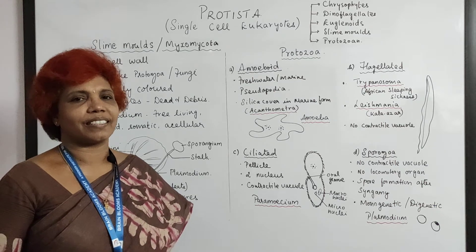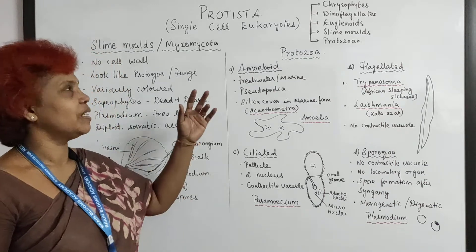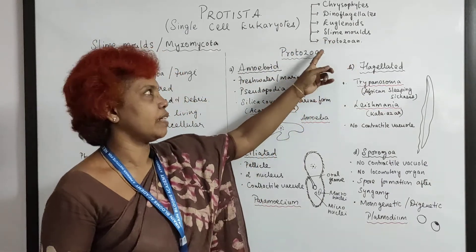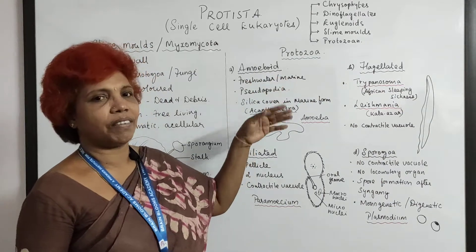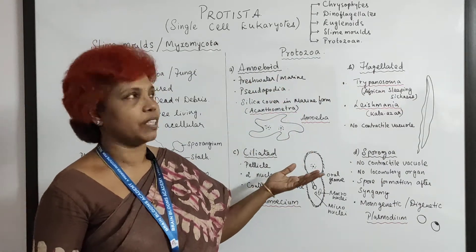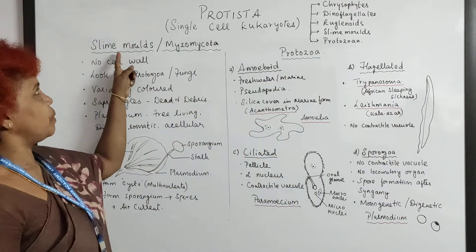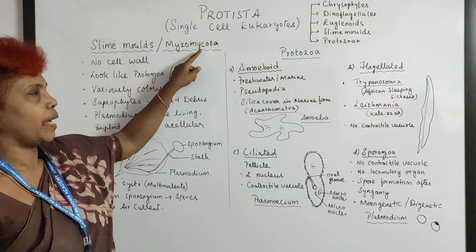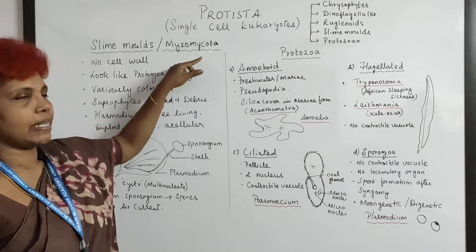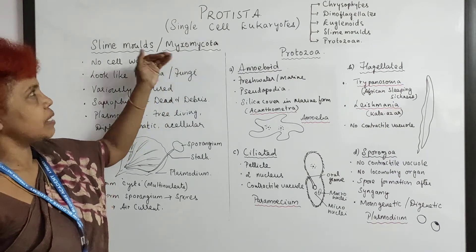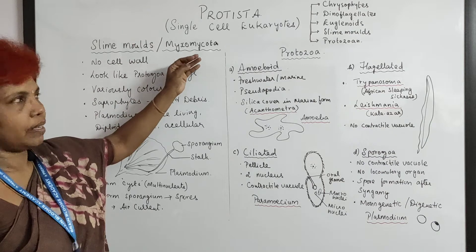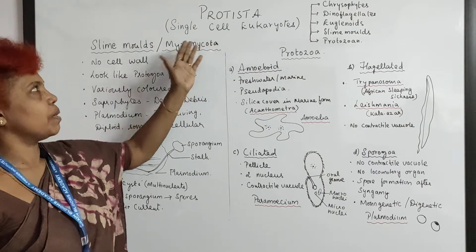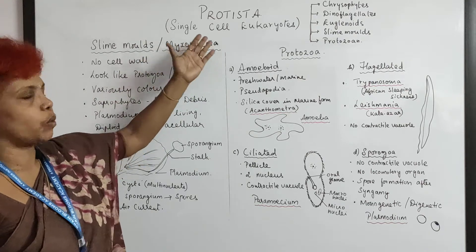Welcome to biology class. Today we cover protistas: the 4th division, slime molds, and the 5th one, protozoans. The first three were discussed in the previous video. Slime mold is otherwise called myxomycota — myc fungi. Previously it was placed under fungi, but according to Whittaker, since it is a single-cell organism, it has been placed under protistas.